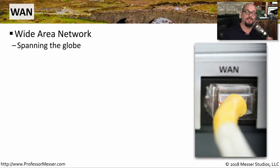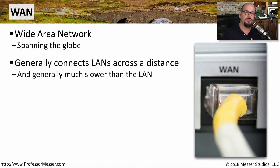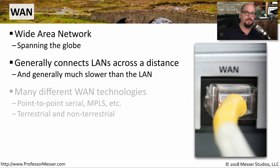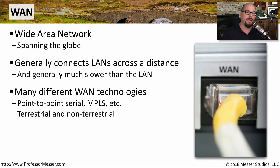If you need to connect two locations that are outside of the metropolitan area, then you're probably going to need a wide area network. This would connect devices that are within the same state, the same country, or even between different countries. This is usually a much larger area than a local area network or metropolitan area network, but you also usually have slower bandwidths available. There are many different ways to provide wide area network connectivity — it might be a point-to-point serial connection, an MPLS connection, or you might use satellite communication for non-terrestrial links.